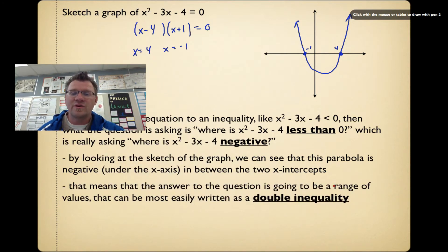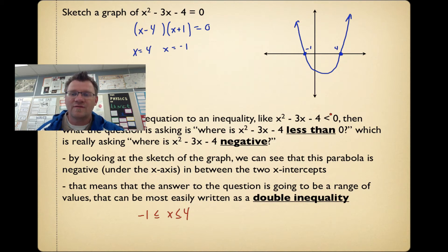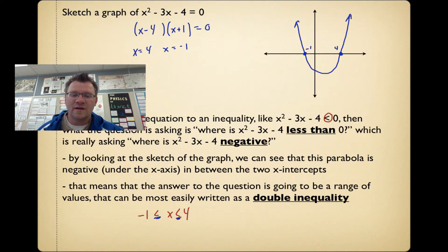The answer is going to be a range of values most easily written as a double inequality. We know it's negative between x values of negative 1 and 4, so we write negative 1 to 4. Now, since the inequality is strictly less than, not less than or equal to, we can't include equal signs. So the answer is x is greater than negative 1 and x is less than 4.